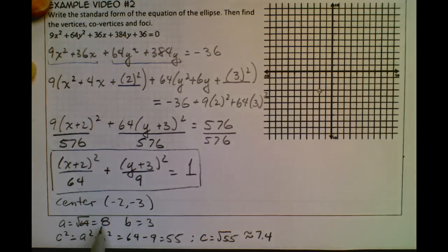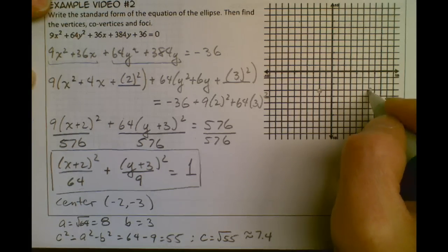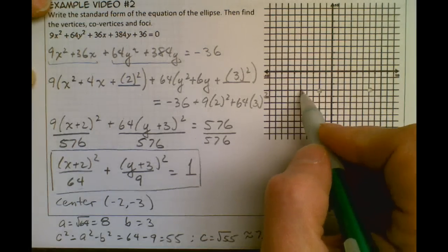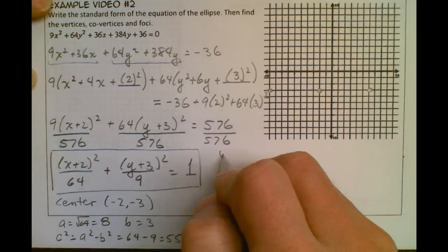So now I'm going to go the distance of a to the left and to the right, so I'm going to go 8 to the right. So 1, 2, 3, 4, 5, 6, 7, 8, right, so that's one vertex, and I'm going to go 8 the other way, so that's going to be my vertices.